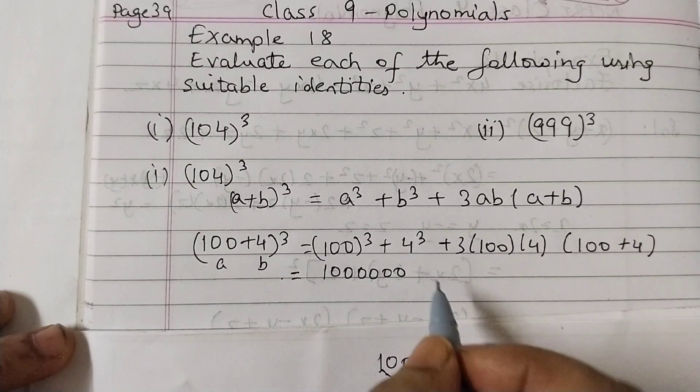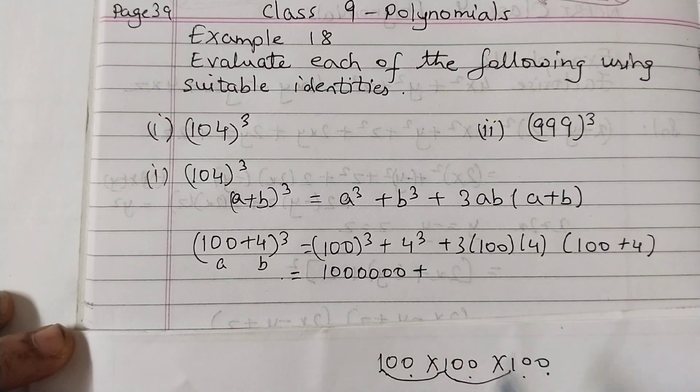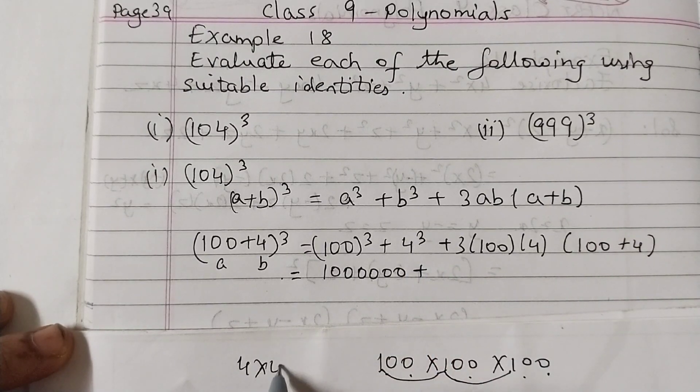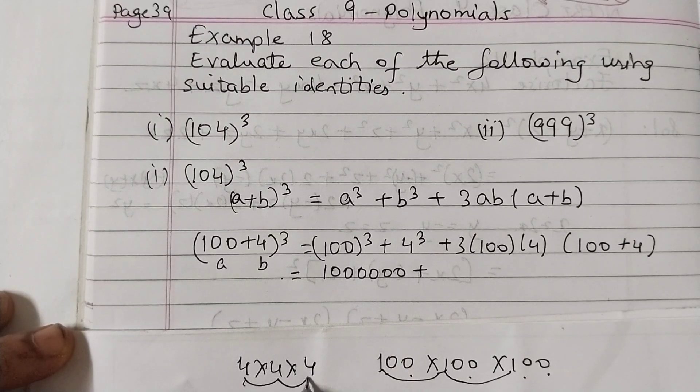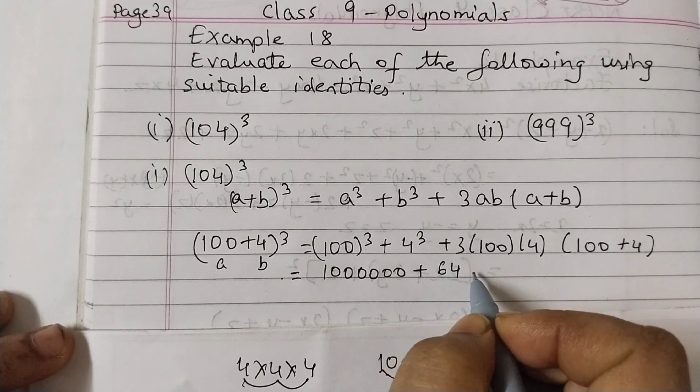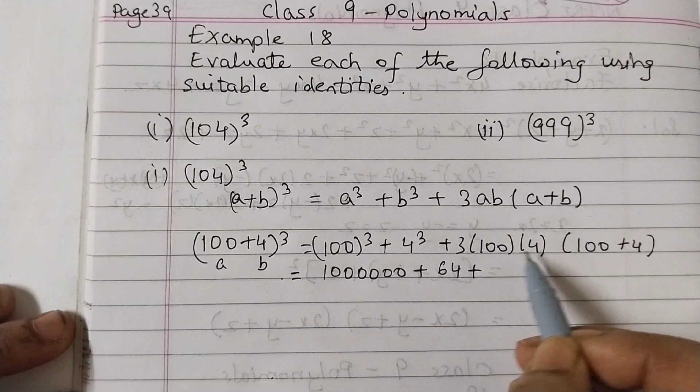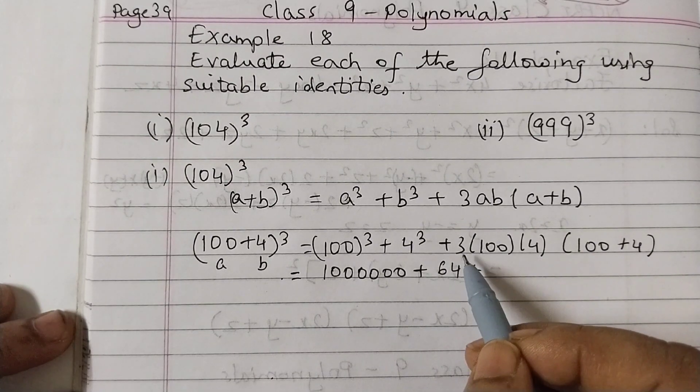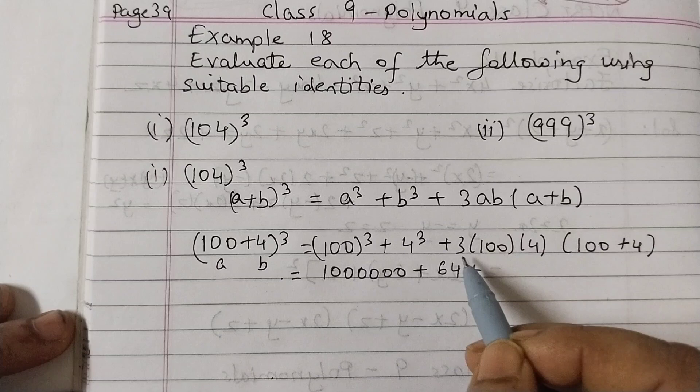Plus 4 cubed which is 4 into 4 into 4. 4 times 4 is 16, 16 times 4 is 64. So 64.